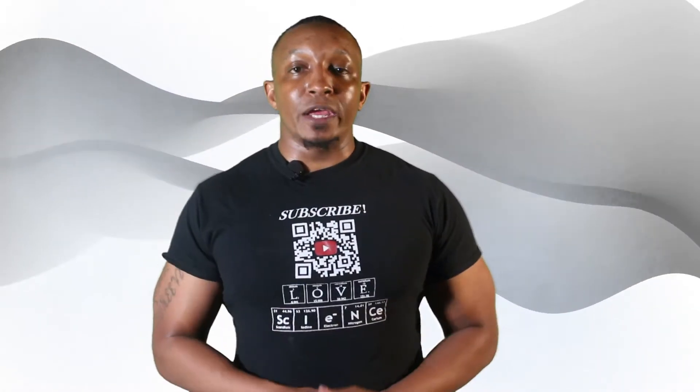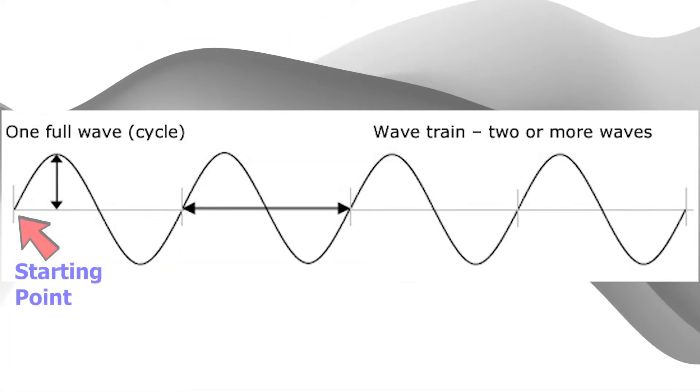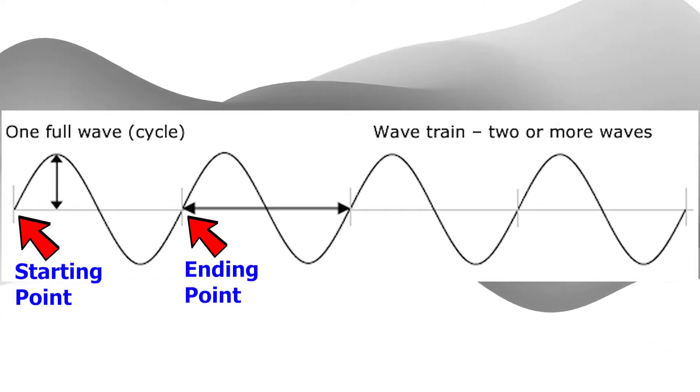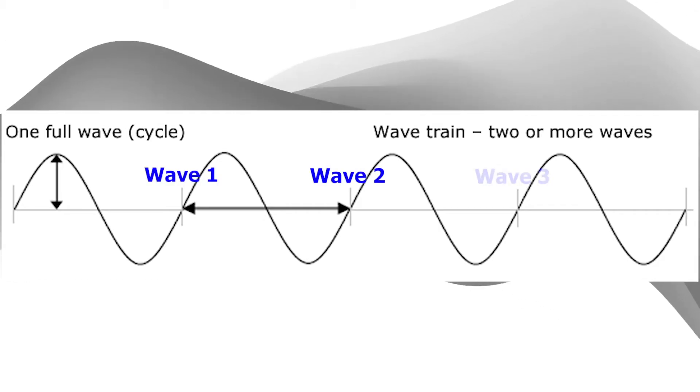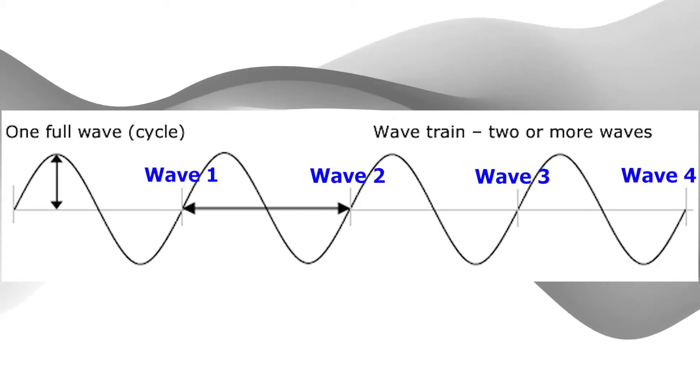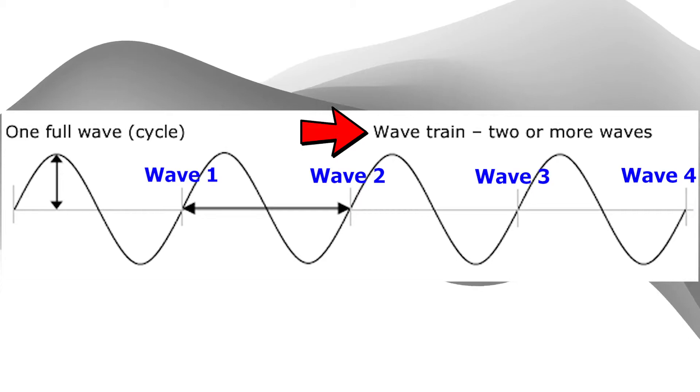Let's look at the following wave. Here is the starting point of the wave and here is the ending point of this first wave. If I follow this wave train to the end, I can tell that there are four full waves on this wave train. A wave train is two or more waves.